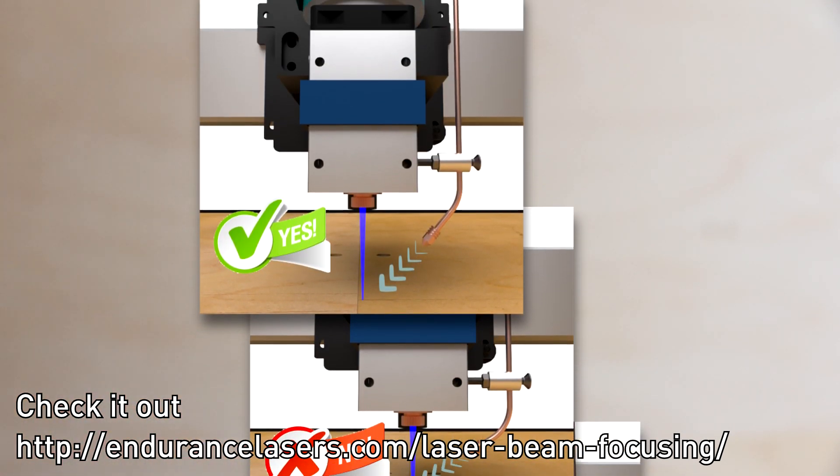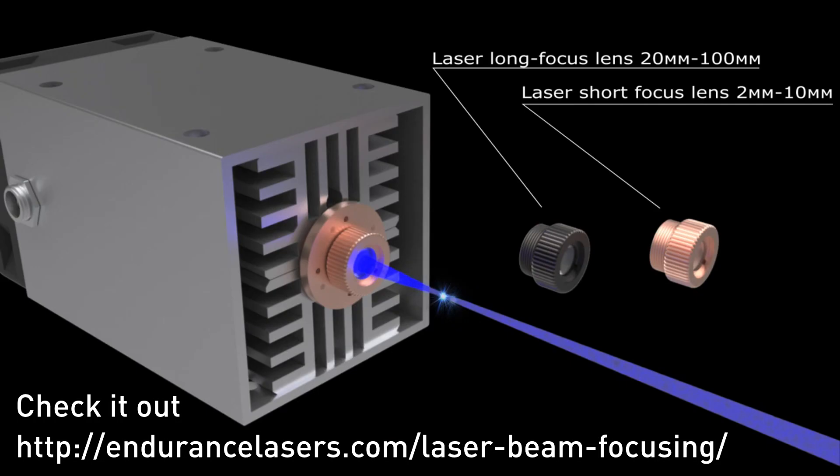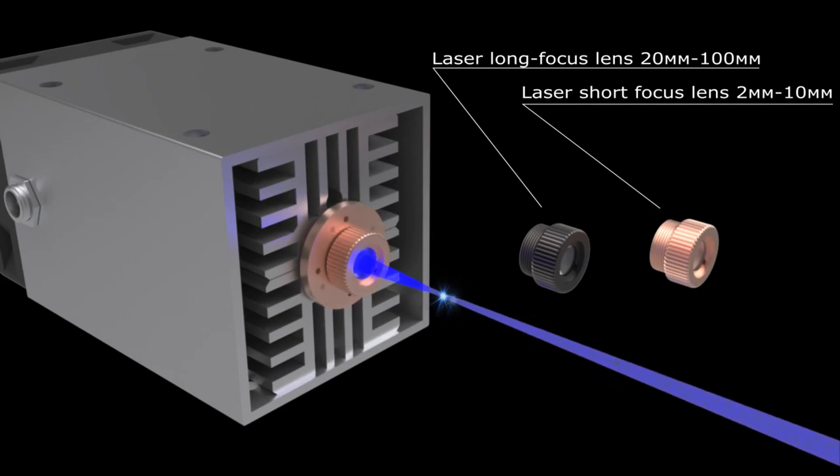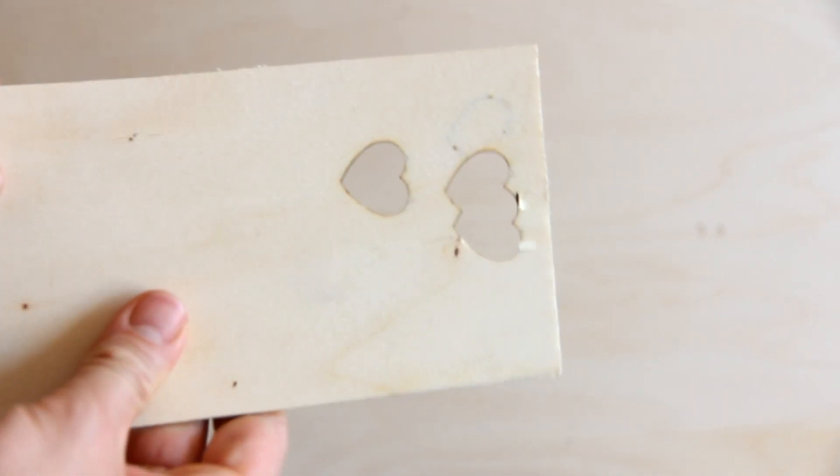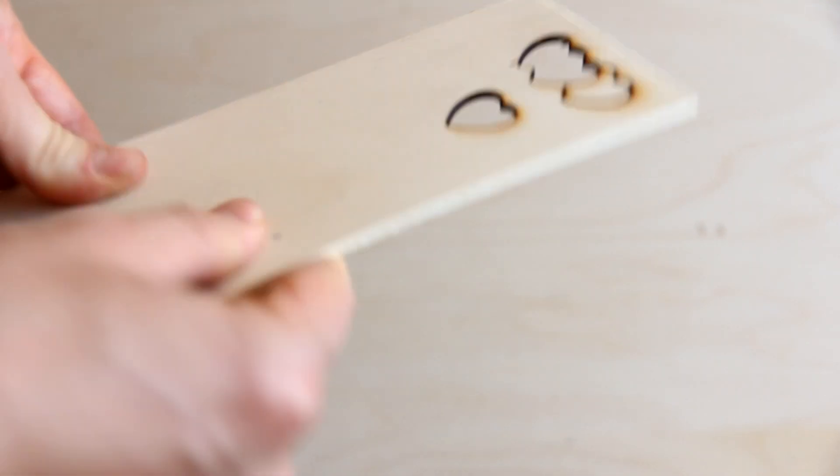The final thing, very important, is that you need to take care of the density of your plywood. For example, I can show you this is very light plywood.